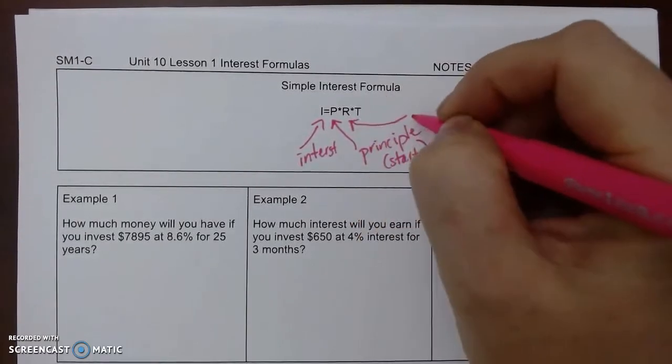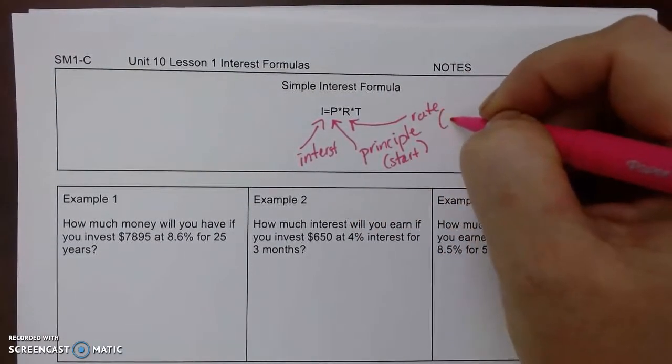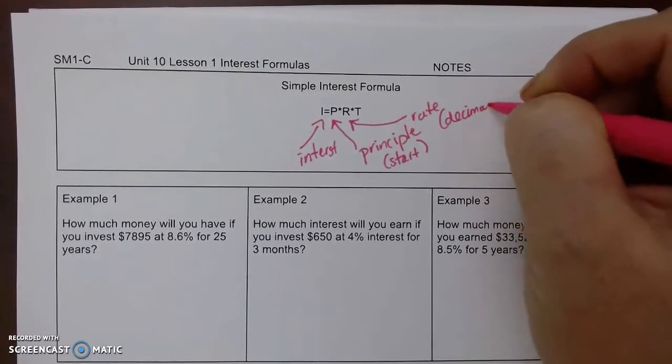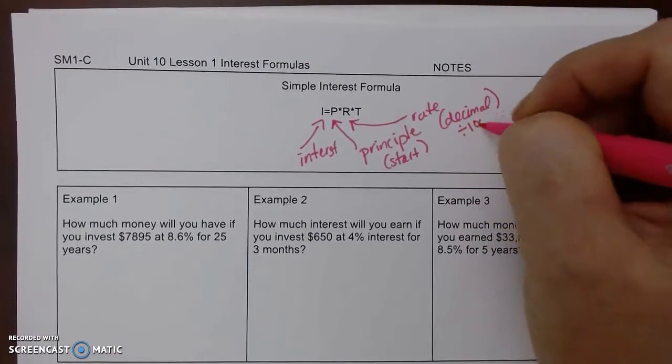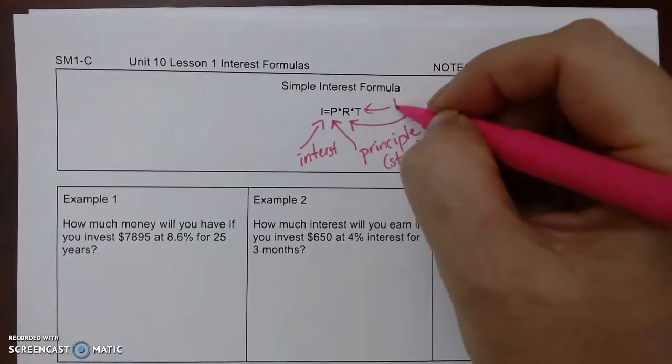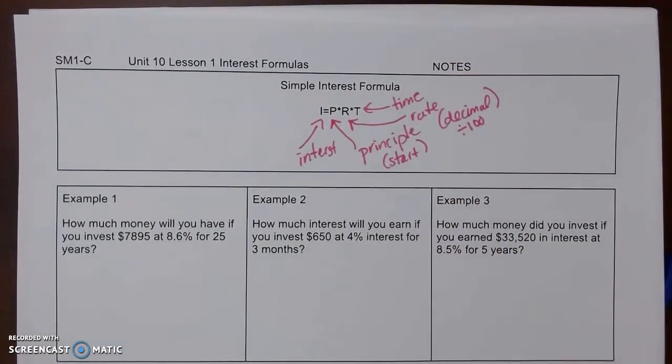R is the rate, and you always want to write that as a decimal. So you want to divide it by 100, and then T is our time. They'll give you an increment of time.